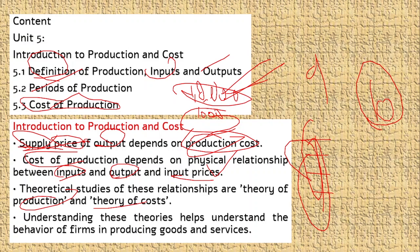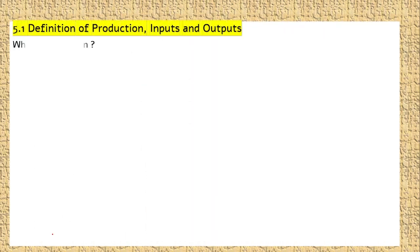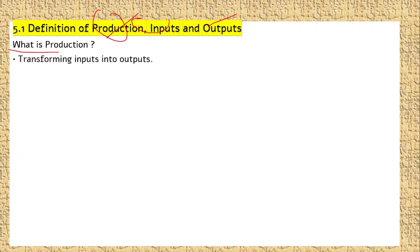Production of goods and services — a firm, which is a business organization, produces goods and services. Definition of production: it is the process of transforming input into output. That is the important thing — input that we are going to use to get the output.